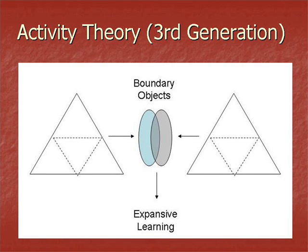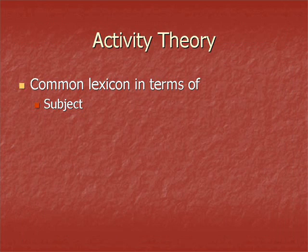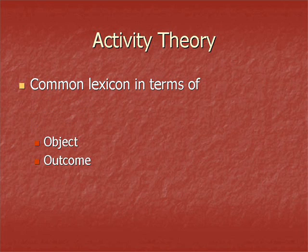Third generation activity theory represents networked activity and incorporates the idea of boundary objects, that is, objects that operate at the interface of many contexts. Where two or more activity systems come into contact, there may be contradictions and tensions. The activity theory approach provides the opportunity to make explicit, and hence to better understand, what happens when activity systems come into contact. There is potential for expansionist learning, where the object or the motive of the activity are reconceptualised to embrace a radically wider horizon than in the previous mode of activity. Activity theory provides a common lexicon to describe the organisational, technological and pedagogic perspectives in terms of subjects, tools, object and outcome, rules, community and division of labour.